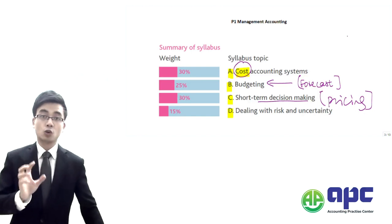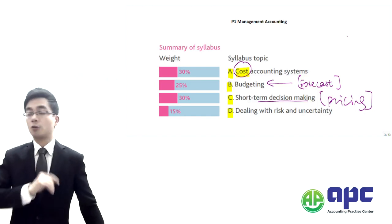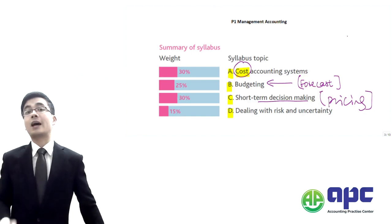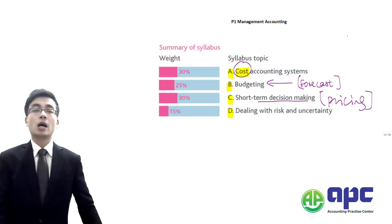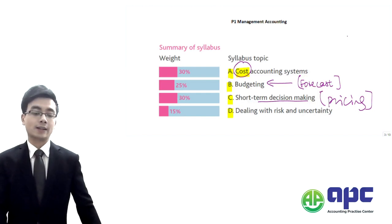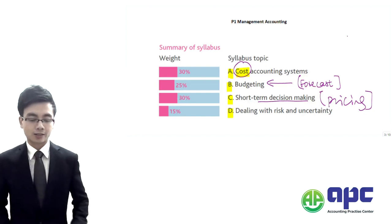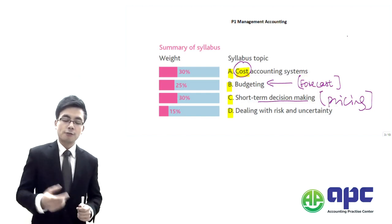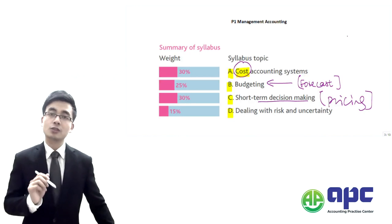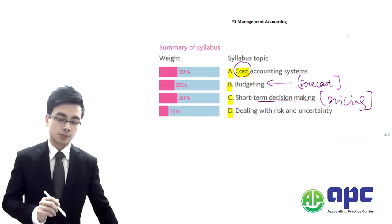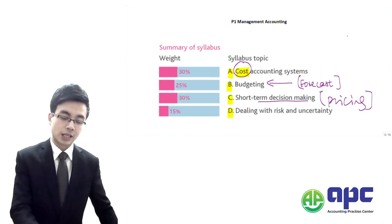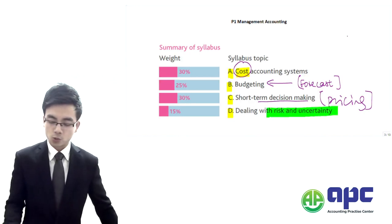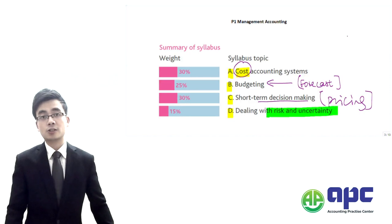That's the short-term decision-making. Of course, there would be other decision-making tools and techniques as well, which we're going to look at in the full course. Finally, Section D of the syllabus is where we're going to deal with risks as well as uncertainty.